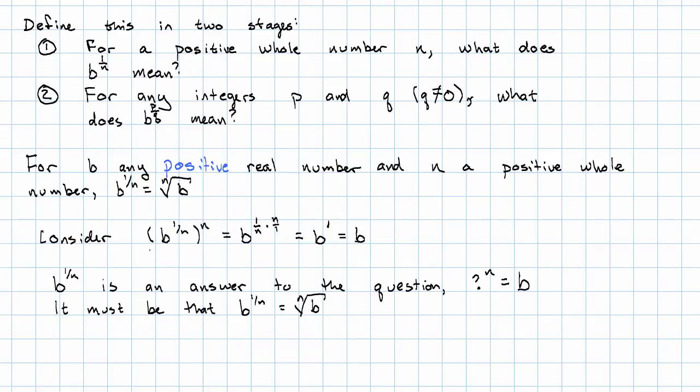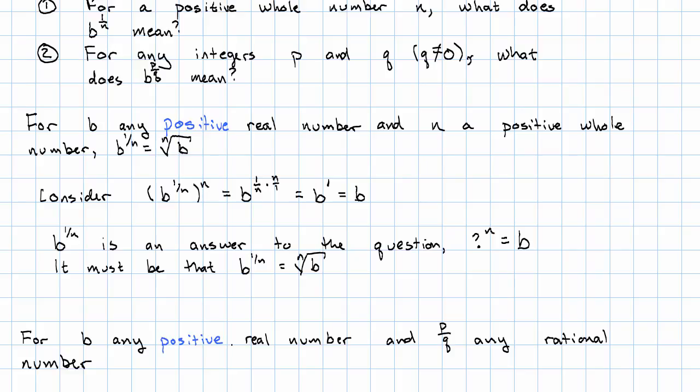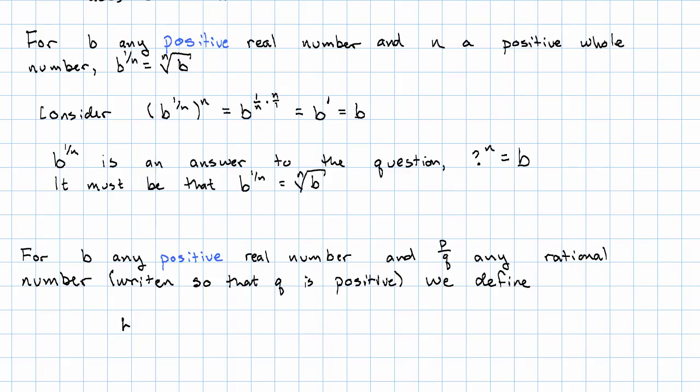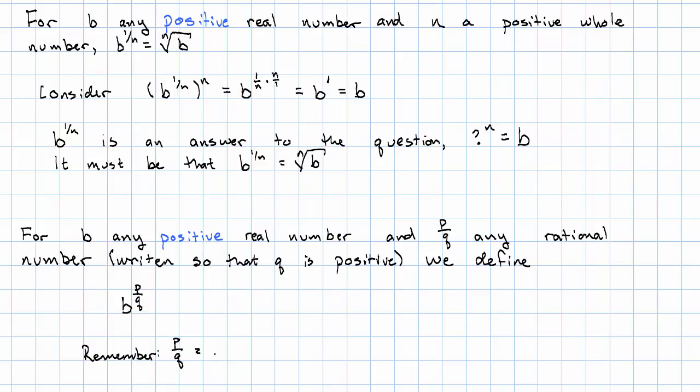So we now know how to define a unit fraction exponent. Next, for b any positive real number and p over q any rational number. Now, technically speaking, I can write a rational number with the numerator or the denominator or both negative. But for simplicity here, whenever I see a rational number, I'm going to put the negative sign in the numerator. So the definition we make is that b to the p over q, remember, p over q just means p copies of the unit fraction 1 over q, which we can also write with the 1 over q first. So we're going to write b to the p over q as b to the 1 over q to the p.